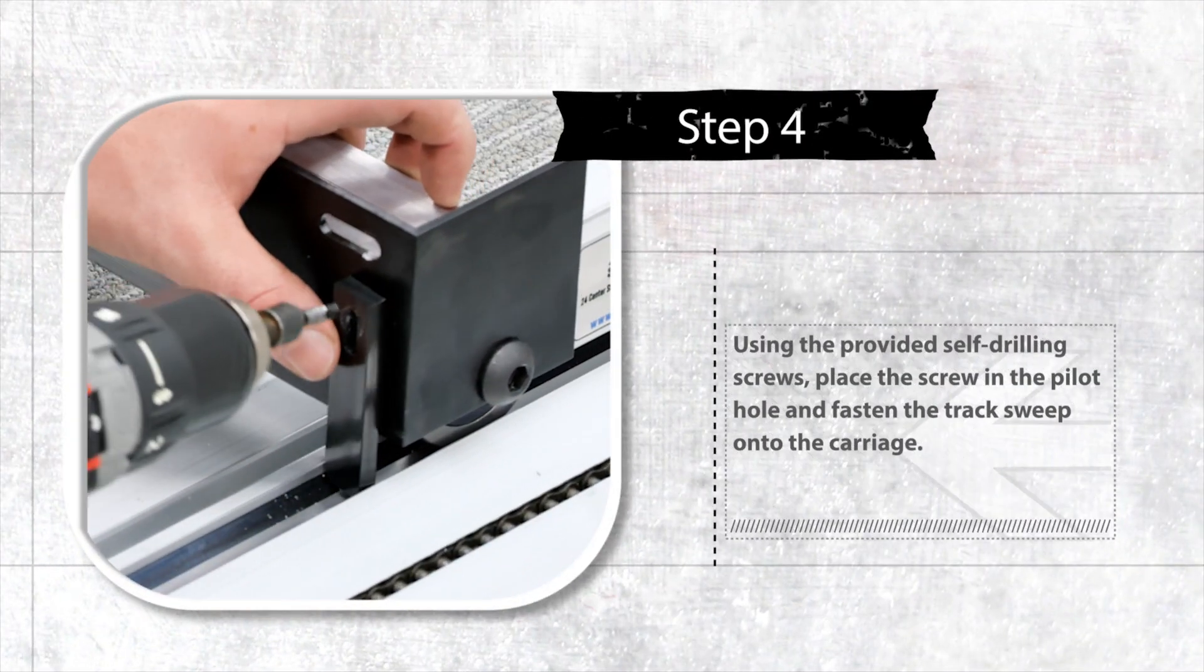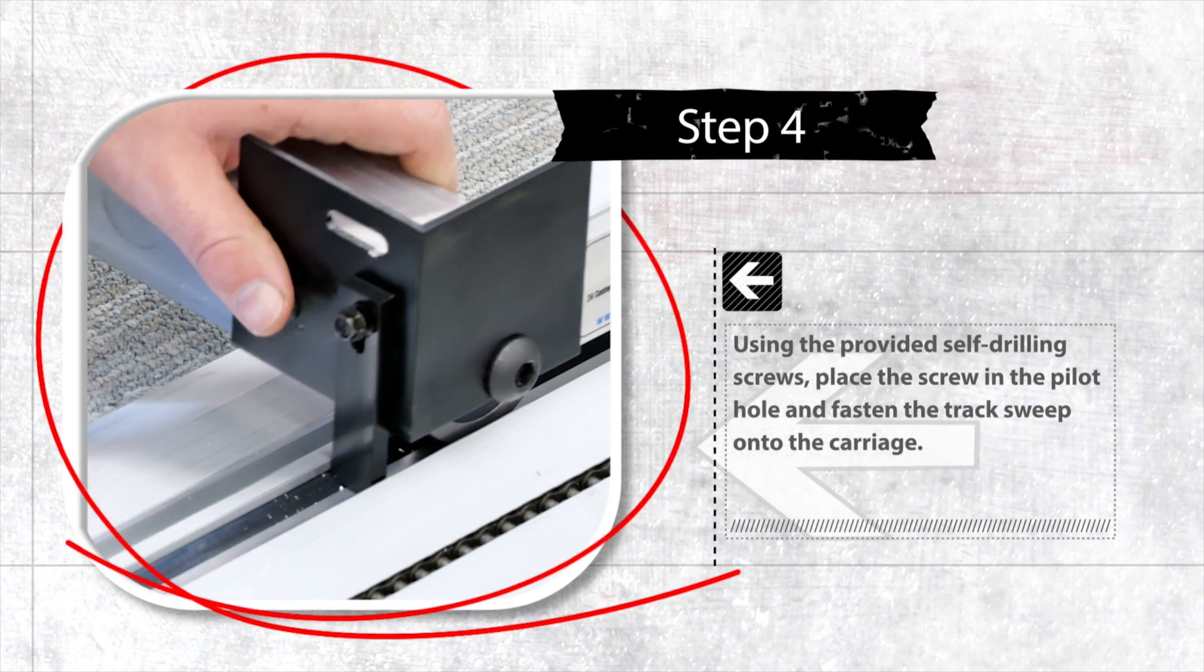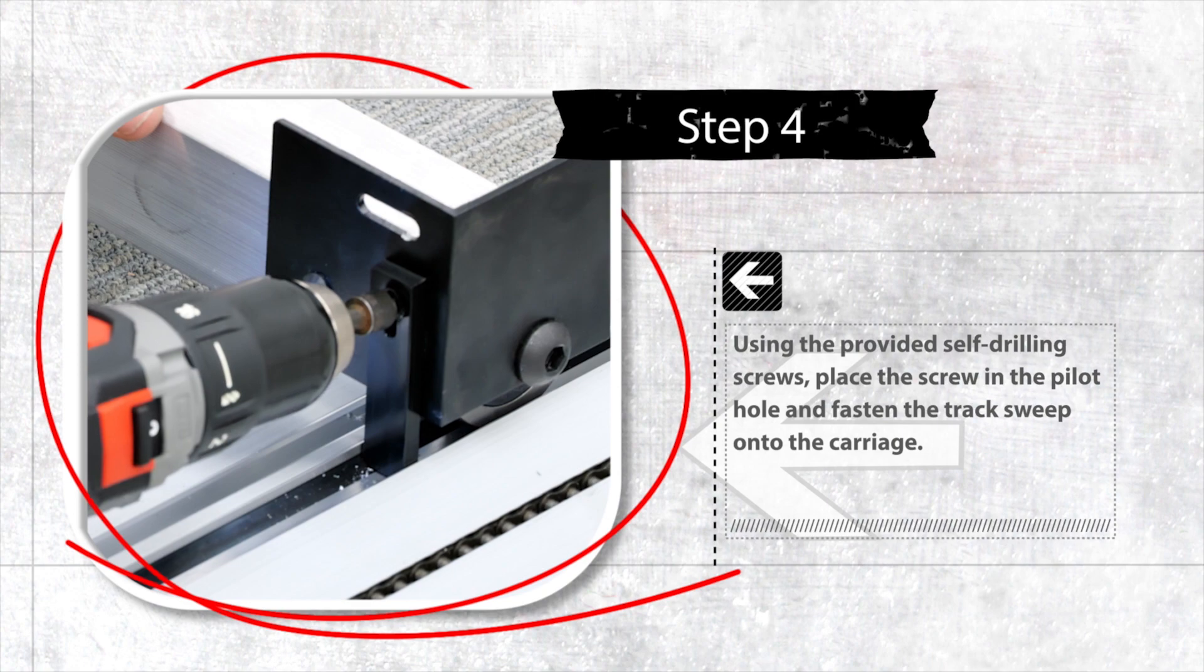Using the provided self-drilling screws, place the screw in the pilot hole and fasten the track sweep onto the carriage.